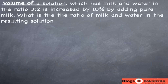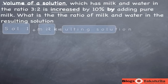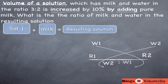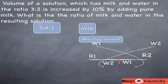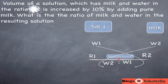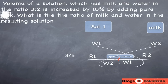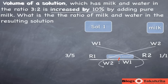In this one, we have to understand that one solution which has milk and water in the ratio of 3 to 2 is having its volume increased by adding pure milk. So the two things being mixed are: one solution with milk and water in some ratio, and pure milk being added. We have the milk-to-total rate, which is 3 by 5. For the pure milk, milk by total is 1 by 1, or 100%.